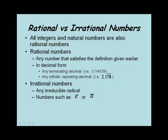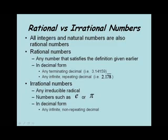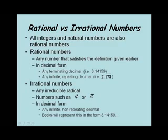Written out in decimal form, they're infinite decimals and never repeat. Any infinite, non-repeating decimal is an example of an irrational number. In your book, you can't write an infinite number of places after the decimal. So in your book you will see these represented in the form 3.14159 and then three dots, indicating the number goes on and does not stop, but you cannot establish a pattern inside the numbers you see. When you see this, your book is indicating that this is an irrational number.